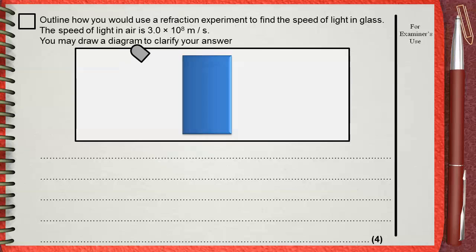Now let an incident ray fall on the side of the glass block with an angle, not perpendicular. Now this light is in air, it's now going to glass. That's why it will refract inside the glass block as shown.